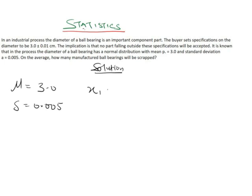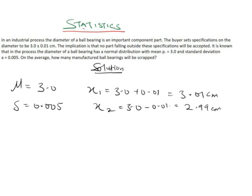What are the accepted regions of the ball bearing diameter? We have x1 equal to 3.0 plus 0.01, which is 3.01 centimeters, and x2 equal to 3.0 minus 0.01, which is 2.99 centimeters. Every diameter between x1 and x2 is under the accepted region; otherwise it falls under the rejected region. Now to determine the percentage of bearings to be rejected.